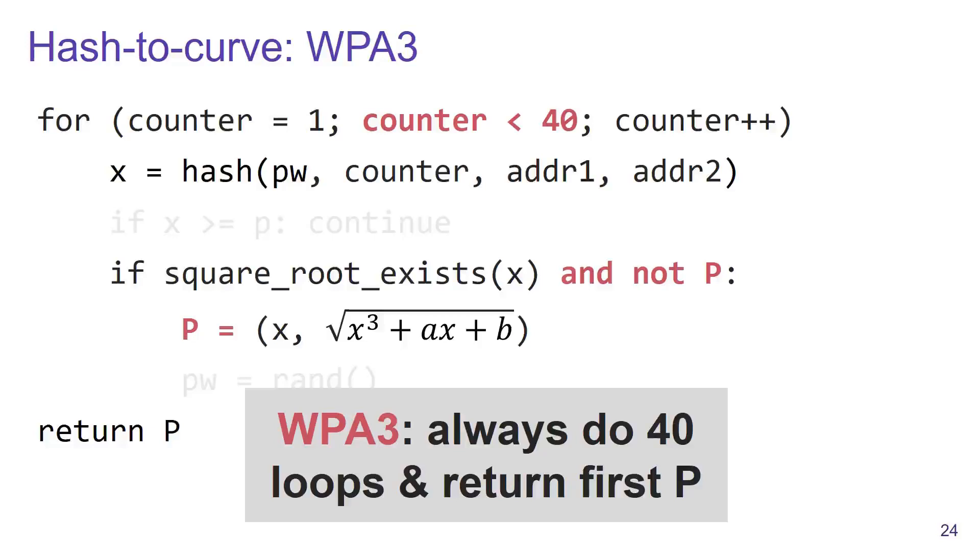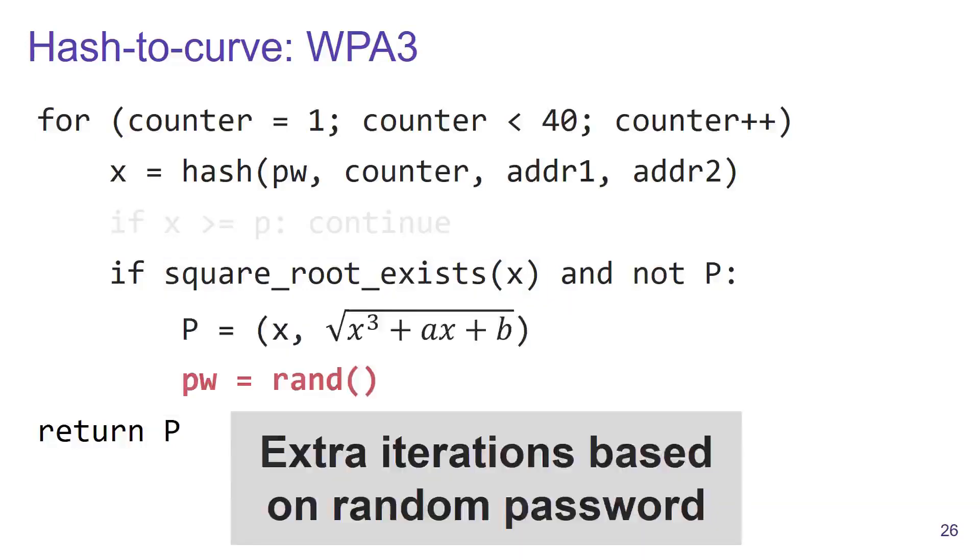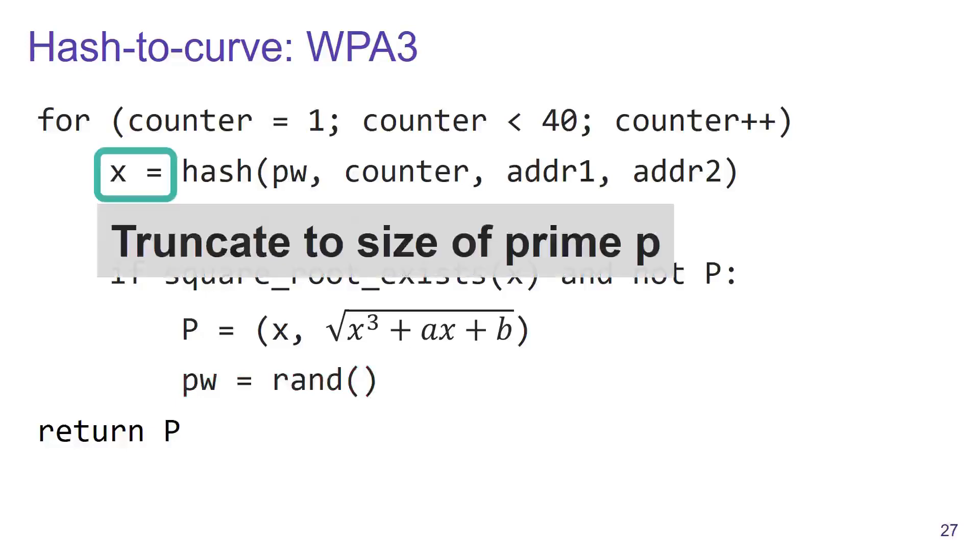On top of that, they checked whether the x value is on the curve using a blinded constant-time test. Additionally, they executed the extra iterations using a random password, again to reduce the chance of any possible side channels.